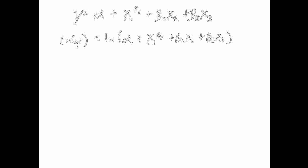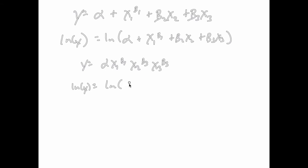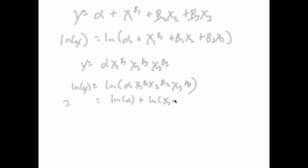Here's a different example we can actually do, and it would help us. Let's say y equals alpha times x1 to the beta 1 — a Cobb-Douglas type of thing. Taking the log of both sides: we do know that log of a times b is log of a plus log of b. So we can immediately split this into log of alpha plus log of x1 to the beta 1, plus log of x2 to the beta 2, plus log of x3 to the beta 3.